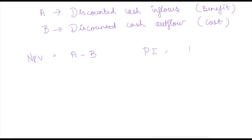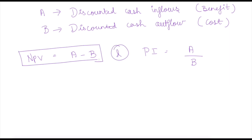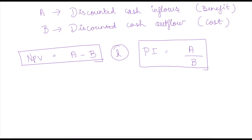Under PI it is nothing but a divided by b — benefit divided by cost. So for simple understanding: NPV is a minus b (subtraction), whereas PI is a divided by b — that is why it is called benefit-cost ratio. Here 'a' should always be greater than 'b' when you are going to select a project. Only if a is greater than b will you select that project, otherwise you drop it. Under NPV you arrive at a positive answer; under PI you arrive at an answer that results in one point something or one.